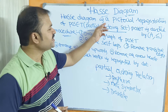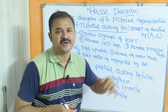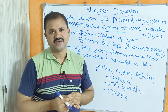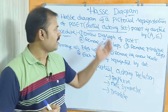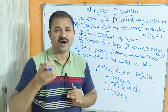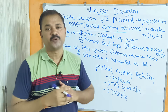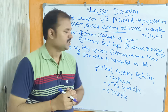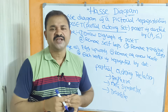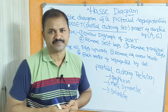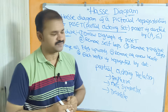A Hasse diagram is the pictorial representation of the poset. It is the graphical or diagrammatic representation of the poset. Now let's see the procedure or steps in order to construct the Hasse diagram. In total we have to follow six steps.